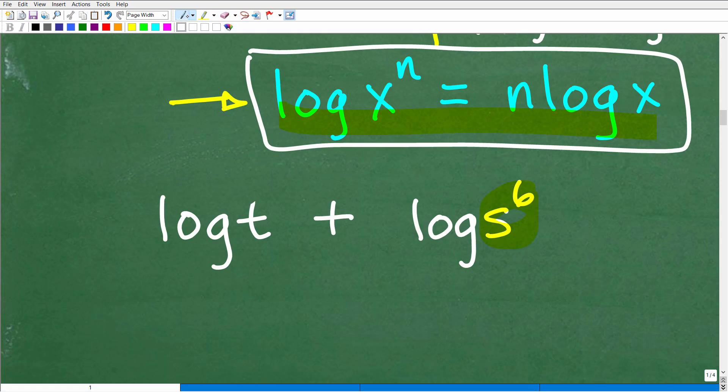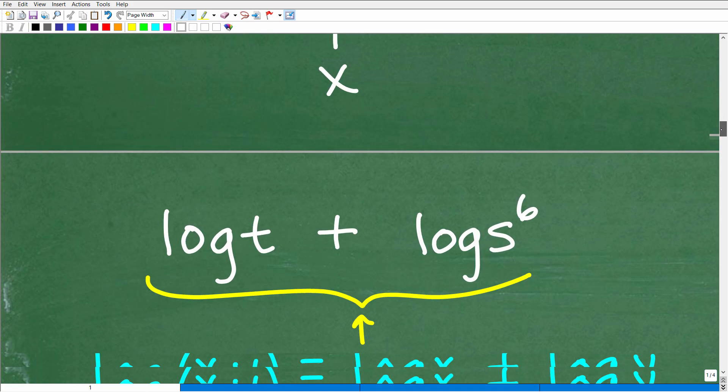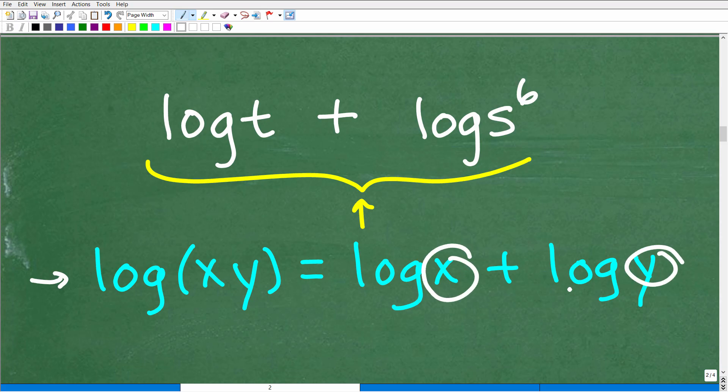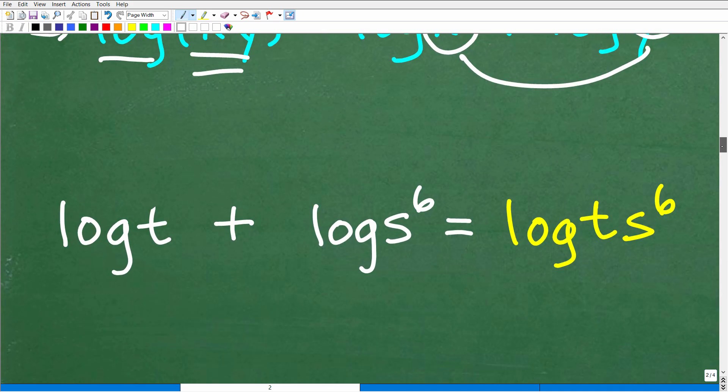This is an application of this property of logarithms. So now we're looking at it like, can we do anything else? Well, yes. We have addition. So when you're adding logs, you want to be thinking multiplication. We can have these two here as factors of a product. So log T plus log S to the 6, we want to be thinking about this property of logarithms. So log X plus log Y, same base, log base 10, I can just write this as a single logarithm. And we have X times Y. So here we'll have T times S to the 6. And that's what this is equal to.